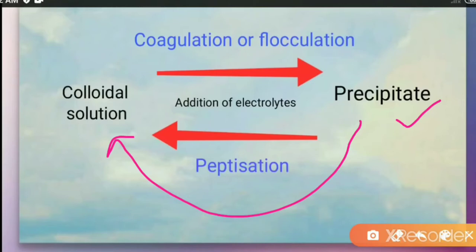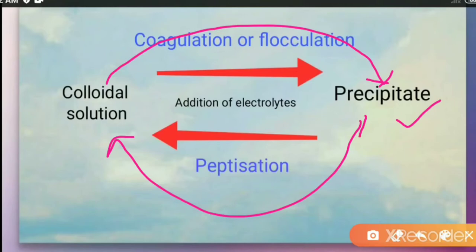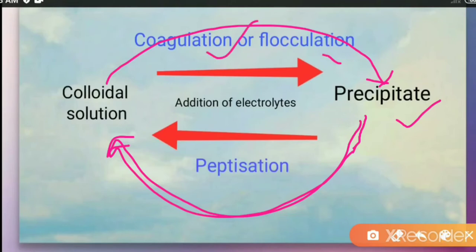That process is called peptidization. Coagulation involves the formation of a precipitate by addition of electrolyte, but when a freshly prepared precipitate is mixed with an electrolyte it gives a colloidal solution. So: when we add electrolyte to a colloidal solution we get a precipitate — that is coagulation or flocculation — and when we add electrolyte to a precipitate we get a colloidal solution — that is peptidization.